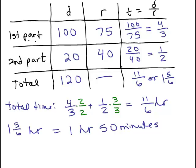Okay, so now that we know the total time and we know the total distance, that was 120, we can find our average rate.